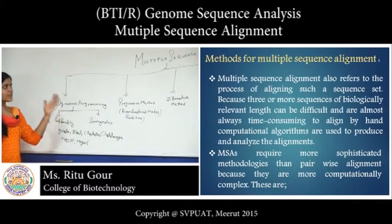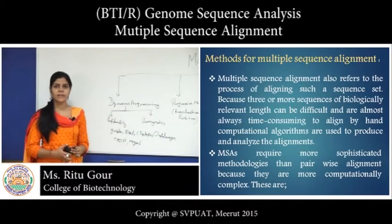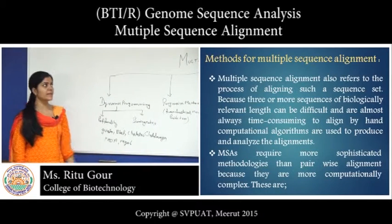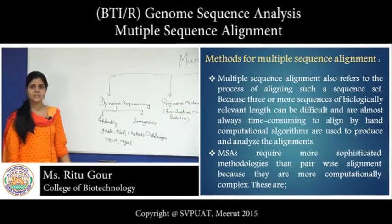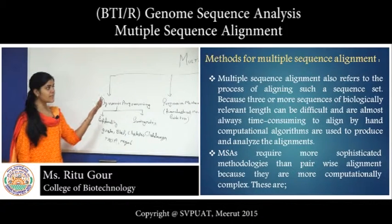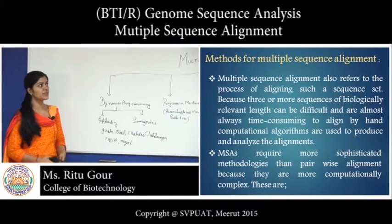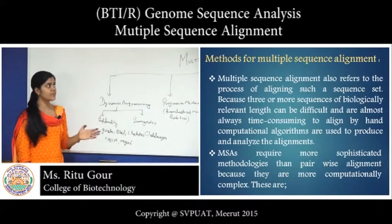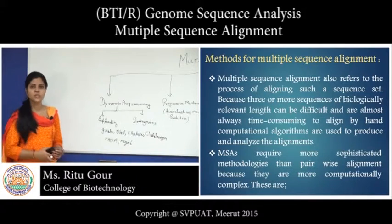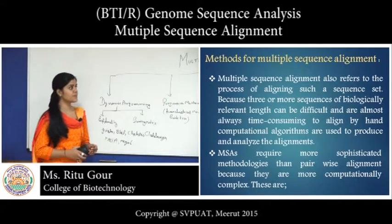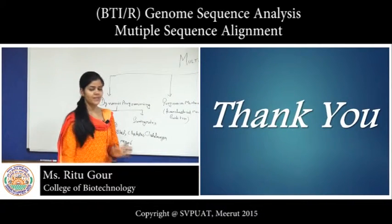Multiple sequence alignment is a more heuristic method for global optimal alignment, because the optimal alignment is a process which is highly expensive and time consuming. Multiple sequence alignment is a process by which we can analyze any sequence and find out which amino acids are used in those sequences, and we can find out the function of those sequences with the help of MSA. Thank you.